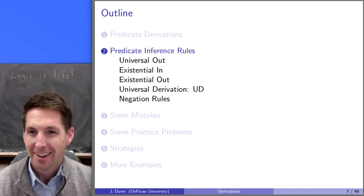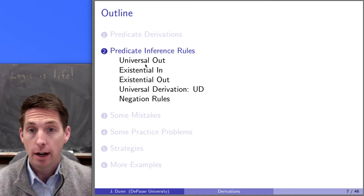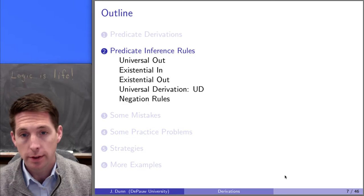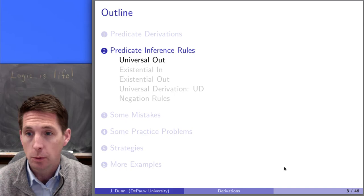This is predicate derivations video two. This video is going to cover just our first new inference rule, which is called universal out. That's going to be the thing covered in this video, just universal out.